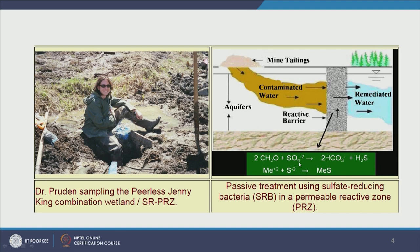The two important reactions happening in the permeable reactive zone are: sulfate is reduced to sulfide, and the metal dissolved in the water precipitates as metal sulfide. She added a lot of electron donors here. Once oxygen is depleted in the column, these electron donors encourage the microbes to reduce sulfate. This becomes a sulfate-reducing zone, and the water coming out the other end is remediated — normal in pH and without heavy metals — saving the vegetation.